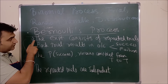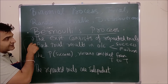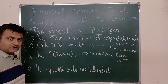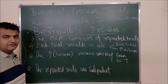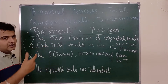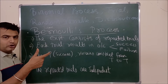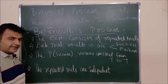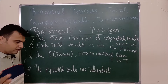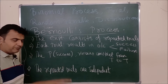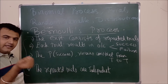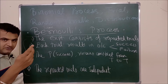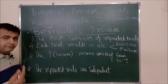The first assumption is: the experiment consists of repeated trials. Suppose you are tossing a coin — that is the first trial. You again toss a coin — that is the second trial. You again toss — third trial. Similarly, you take an item and check whether it is defective or not — that's the first trial. Get to the next box, pick up an item, check whether it is defective or not. Go for the third box. So it consists of repeated trials.